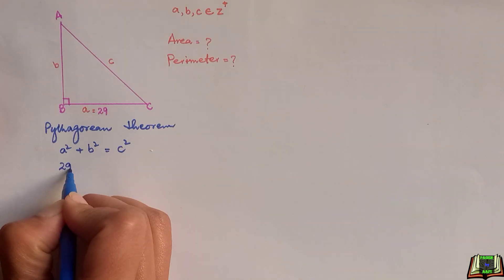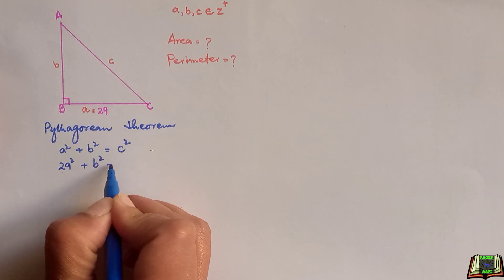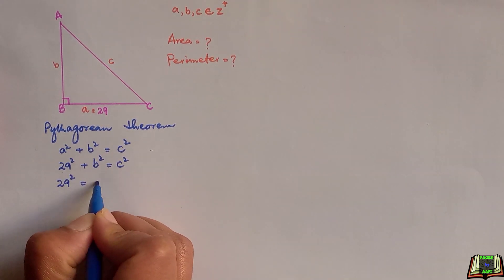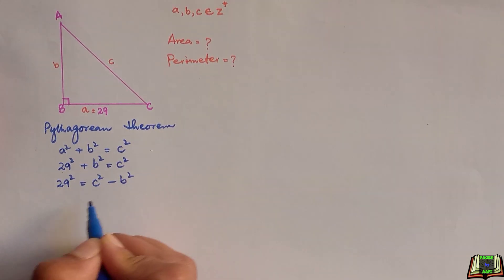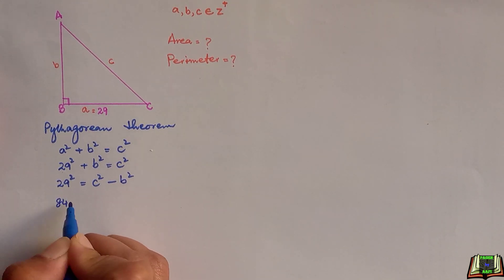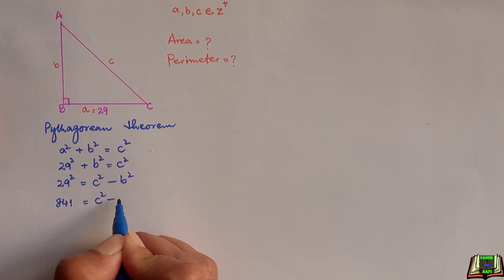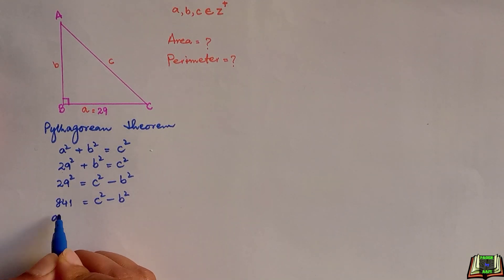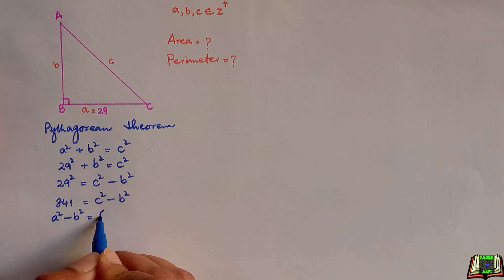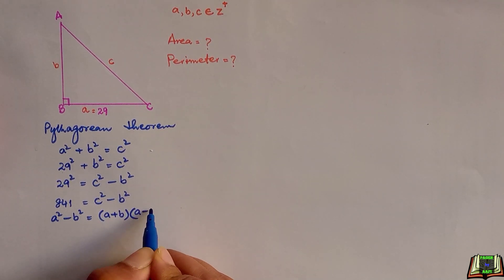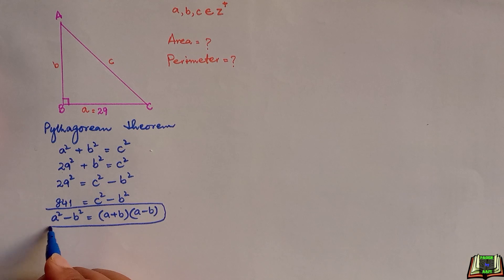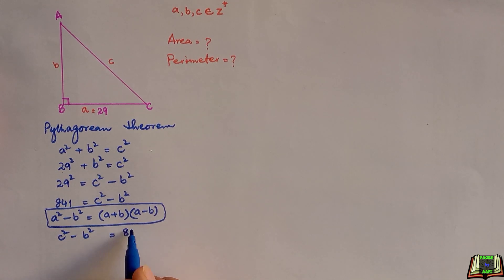We know the value of A, so 29² + B² = C². Moving B² to the right hand side gives C² − B² = 29² = 841. Here we are going to use the algebraic identity A² − B² = (A + B)(A − B). The equation we have is C² − B² = 841, and we will apply this identity.